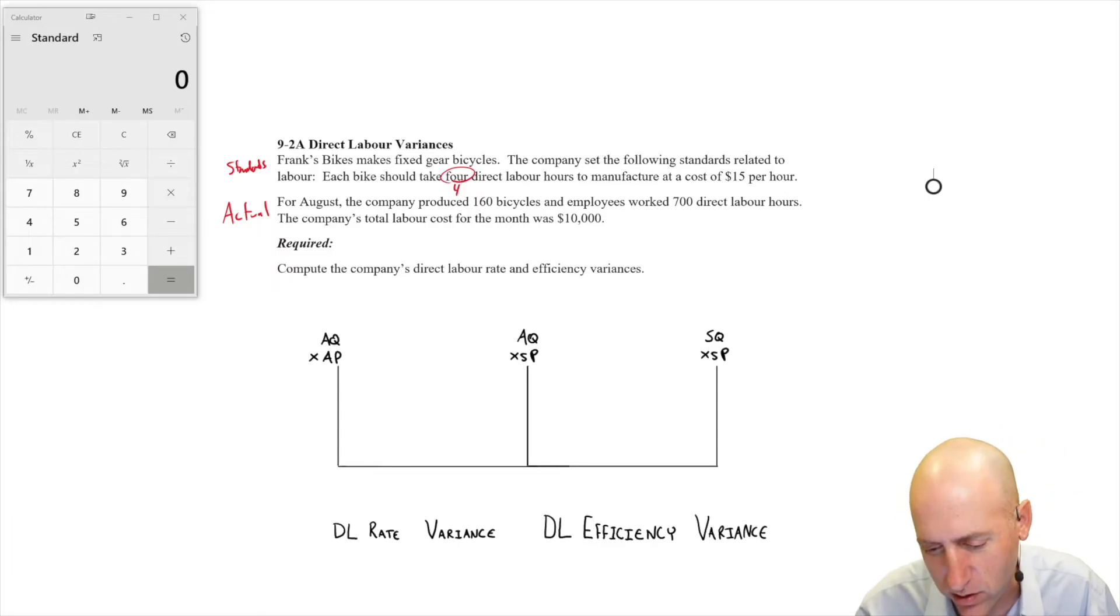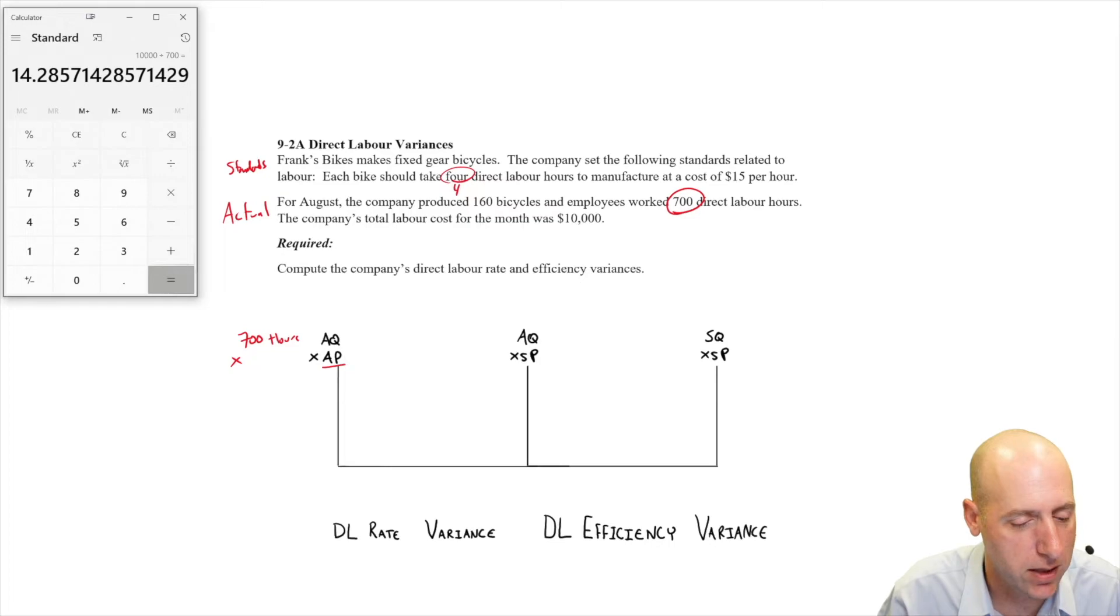So what is the actual hours that our employees worked? They actually worked 700 direct labor hours. Let's put that in here, 700 hours. Our actual price is the labor rate, it's the hourly rate. Now, in a textbook they might not call this AP, they might call it AR, actual rate. I like to call it AP just so it's the same every table. It's easy for me to conceptualize that way. But if you want to use AR, that's fine. It is the actual rate. It's also the actual price per hour we're paying for labor. So what is our rate? Well, we paid $10,000 for 700 hours. What's our hourly rate? 10,000 divided by 7, 14.286. And 700 times 14.286 is of course $10,000, what we actually paid for labor.